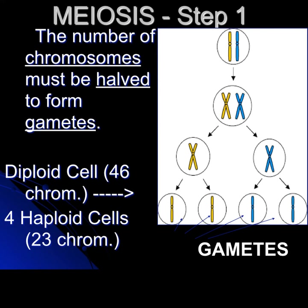Step one of meiosis: the chromosomes have to be halved to form gametes. Your diploid number — using humans — is 46. We would start with one cell with 46 chromosomes and end up with four haploid cells with 23.